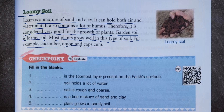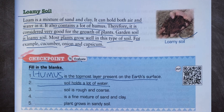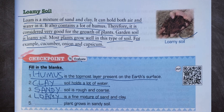Checkpoint — fill in the blanks. First: humus is the topmost layer present on the earth's surface. Second: clay soil holds a lot of water. Third: sandy soil is rough and coarse. Fourth: loam is a fine mixture of sand and clay. Fifth: babul plant grows in sandy soil.